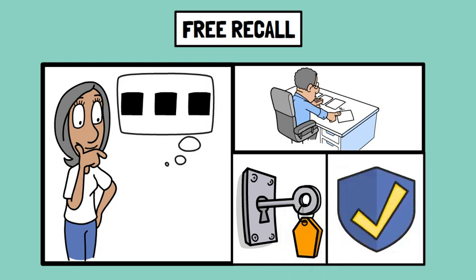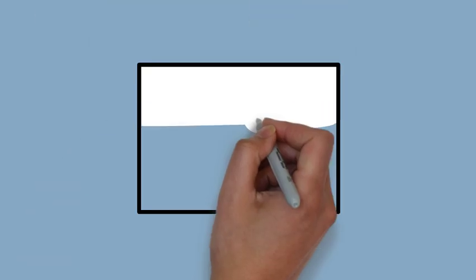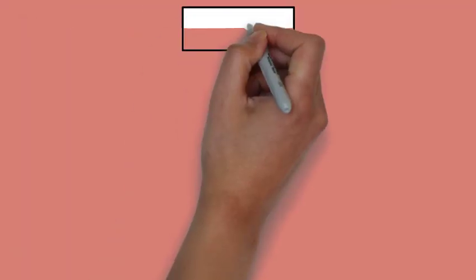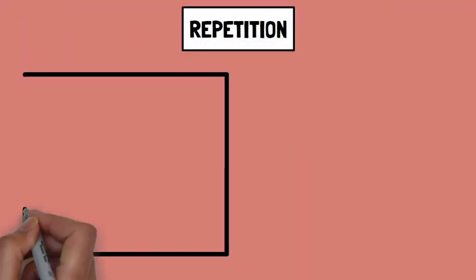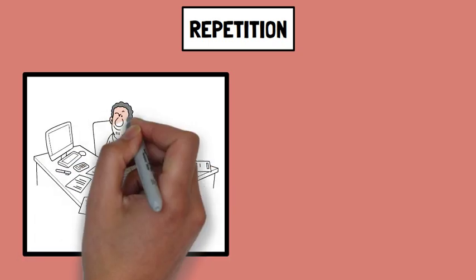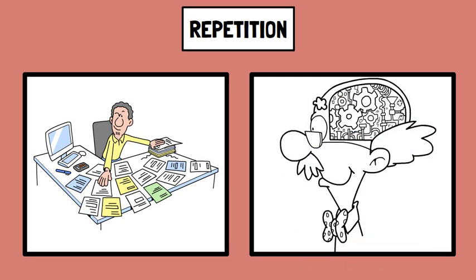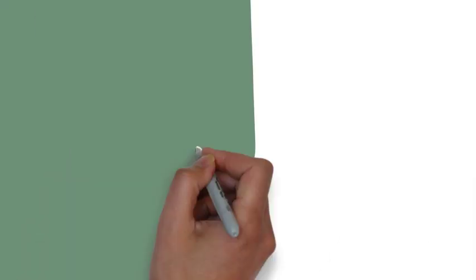This form of verbal learning challenges the brain to retrieve information without external hints, showcasing the depth and strength of one's memory associations. Determinants of verbal learning: several factors influence verbal learning, shaping the efficiency and effectiveness of the process. First, repetition. The more frequently information is encountered, the more likely it is to be retained. Repetition helps solidify neural pathways, making it easier to recall information.